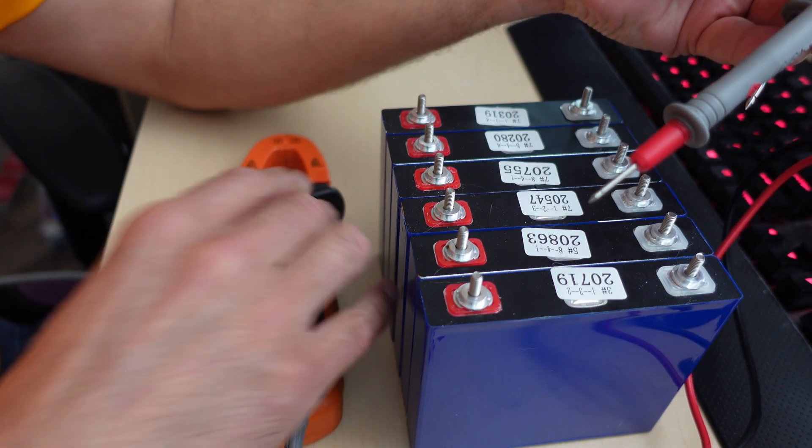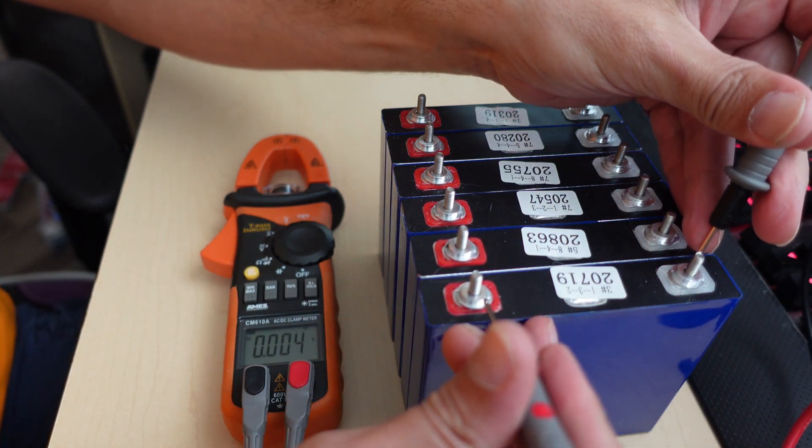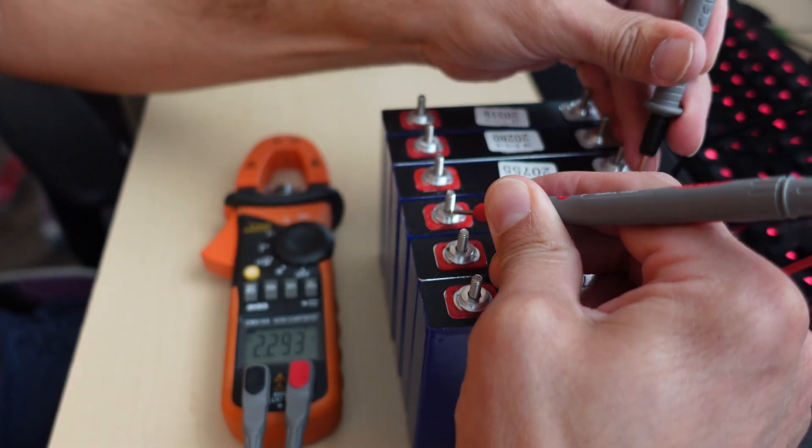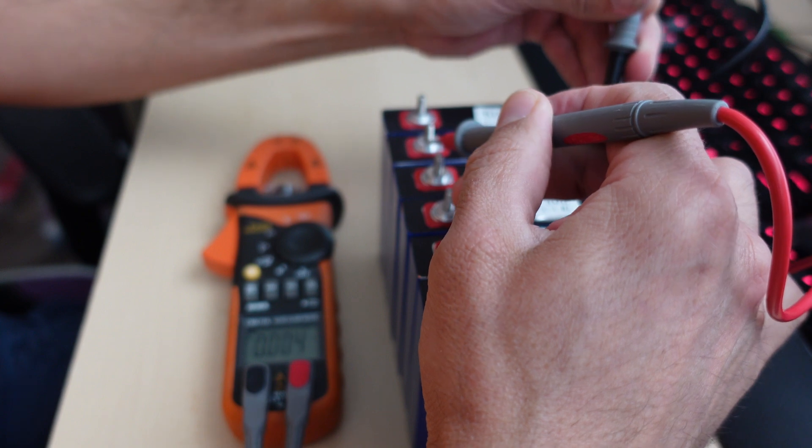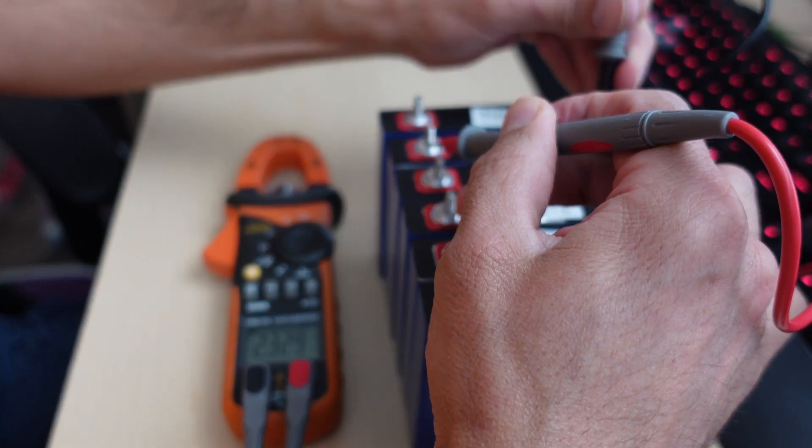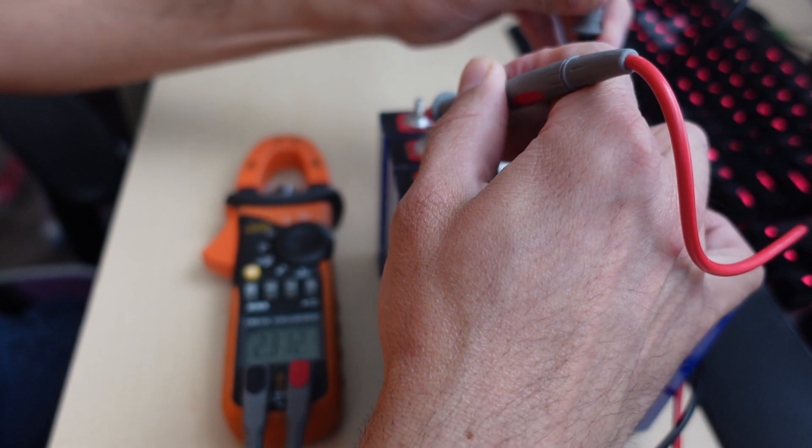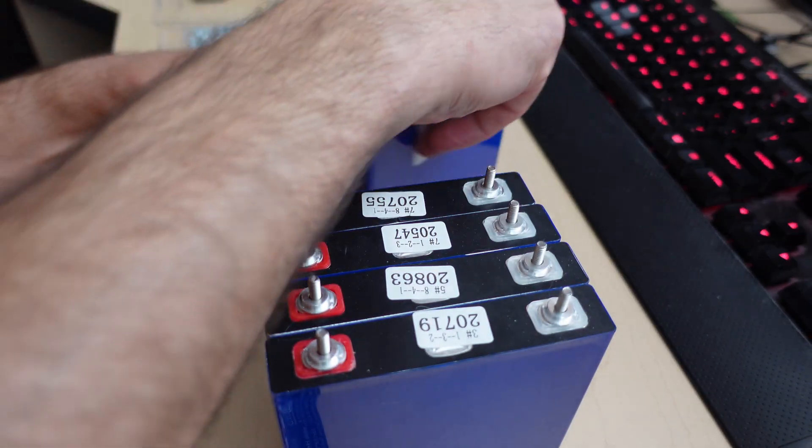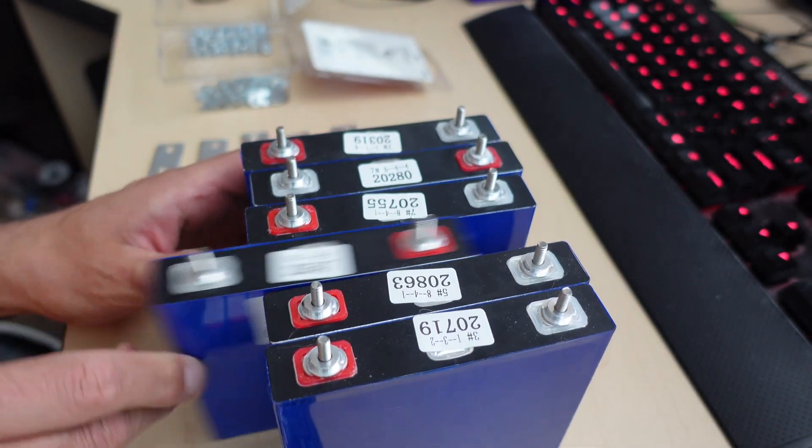All of the battery voltages showed up pretty close with the exception of one cell. 2.29 for the first one, 2.3 for the second one, 2.29, 2.33 so that one's a little higher, 2.329 and 2.31 for the last cell so they're all pretty close. I'll go ahead and arrange all these batteries in the proper sequence here to make a nice serial battery pack and it's time to connect up the BMS.